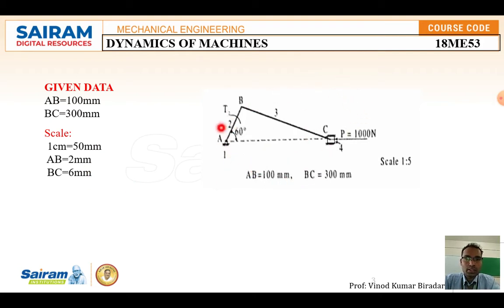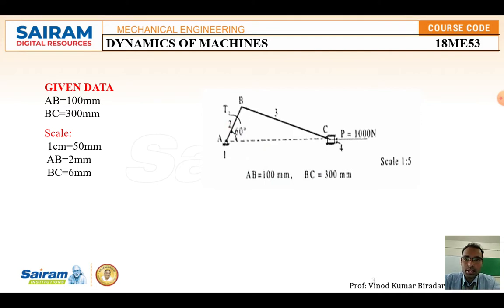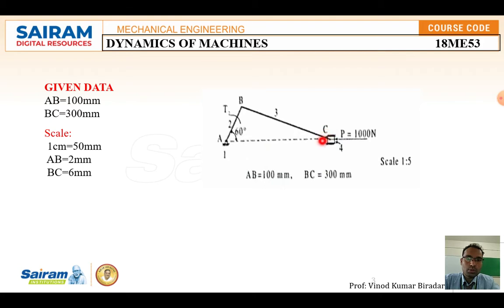Once you note all values for links 1, 2, 3, and 4, draw the free body diagram. Mark point A on a sheet. AB equals 2 mm at an angle of 60 degrees — from point A, cut one arc at 2 mm at 60 degrees to get point B. From point A, draw a horizontal line since the piston applies force from this side. From point B, cut an arc of 6 mm to get intersection point C. Join line BC. AB should be inclined at 60 degrees, and the external force P equals 1000 Newton acts on the piston.